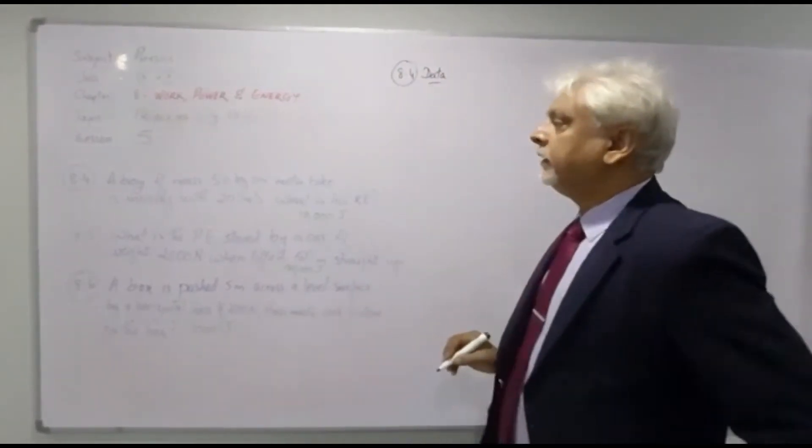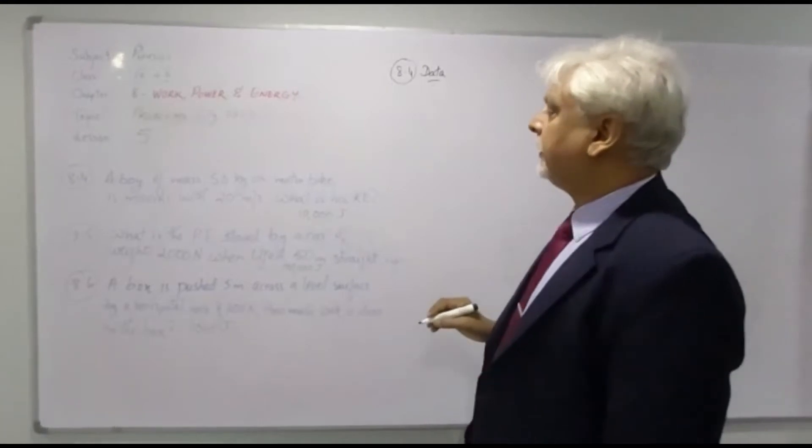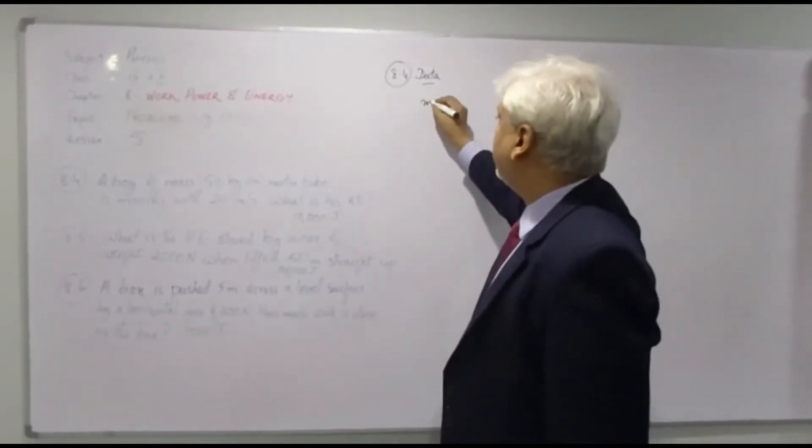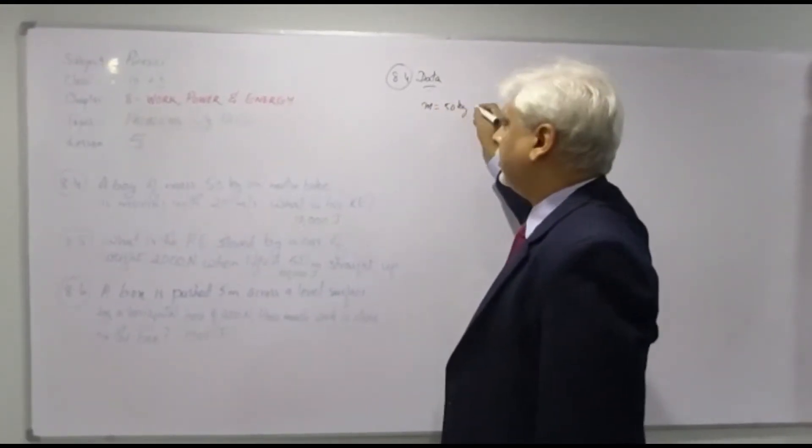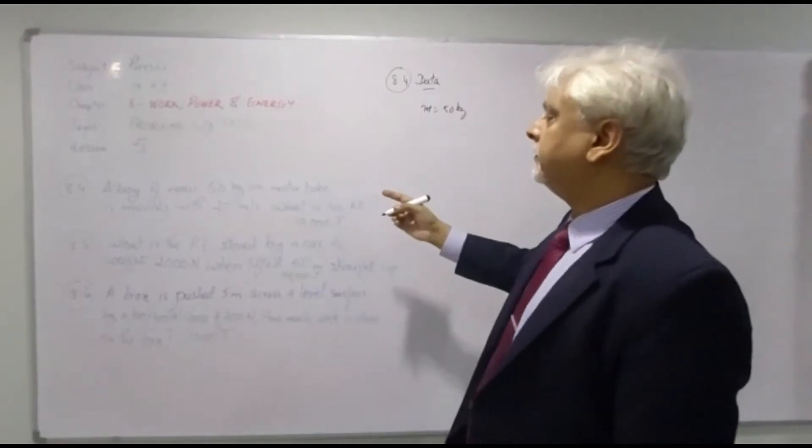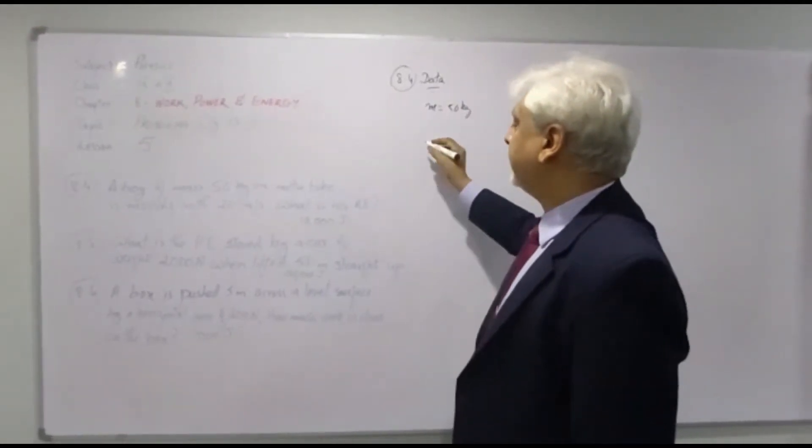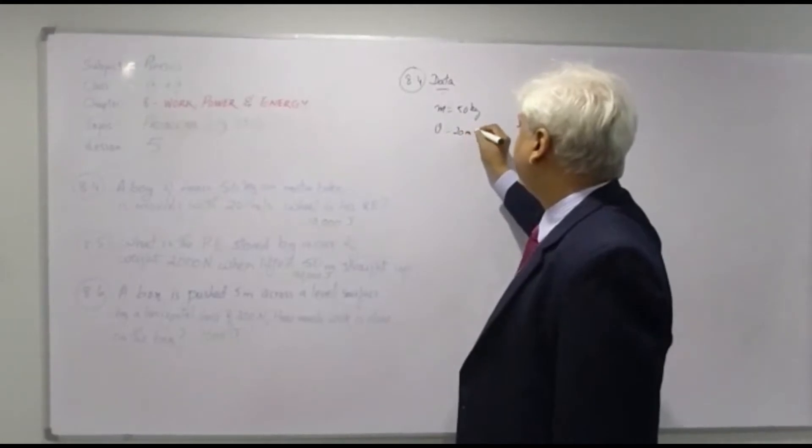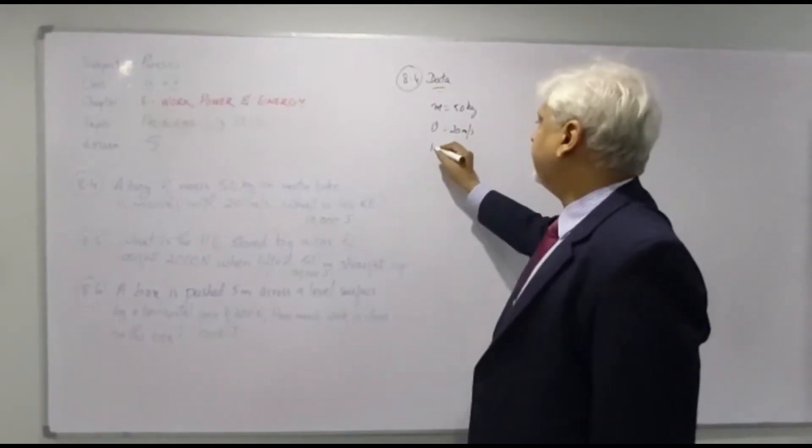Now it says here that a boy of mass 50 kilogram on motorbike, mass is 50 kilogram on a motorbike which is moving at velocity of 20 meter per second. What is this kinetic energy?